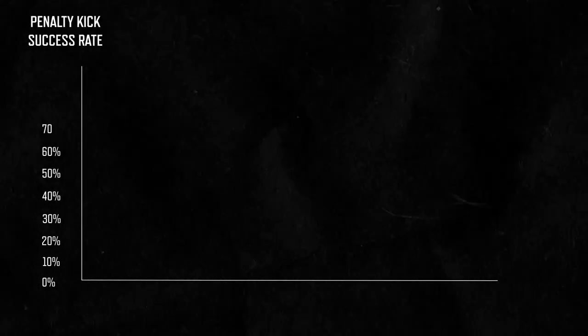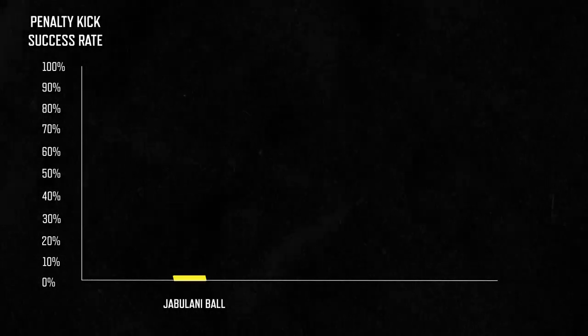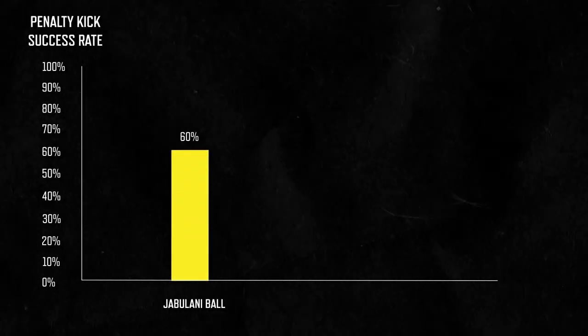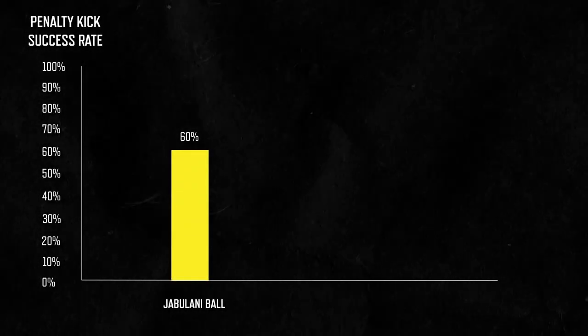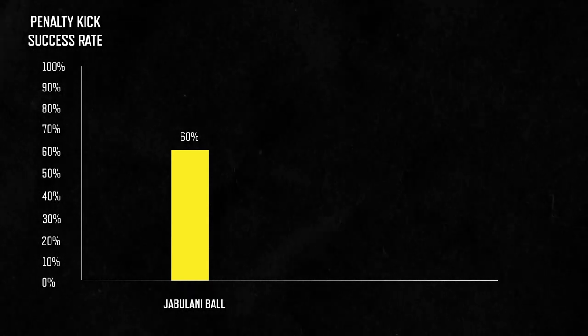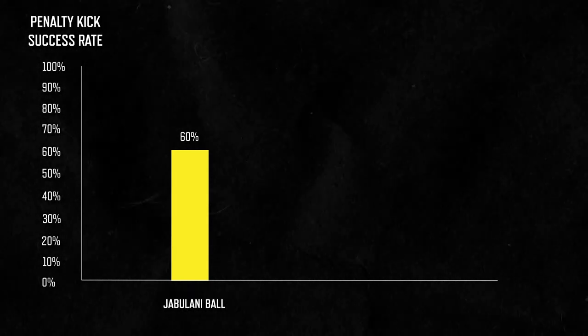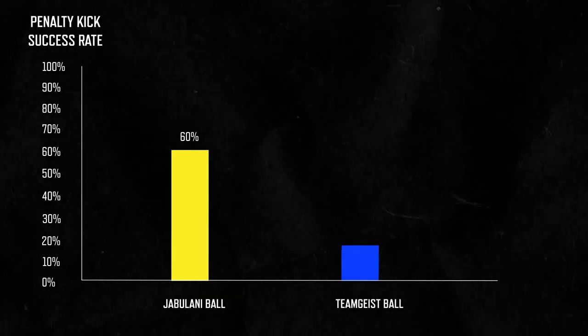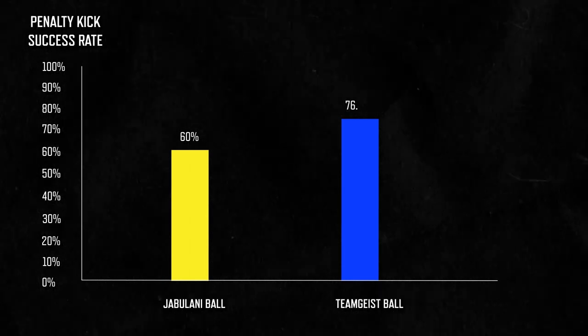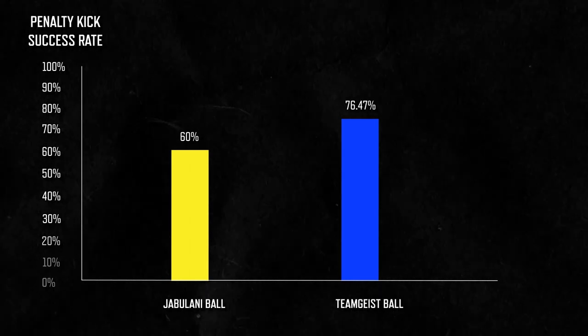The unusual aerodynamic movements of the Jabolani were likely a key factor in the 60% penalty kick success rate from players who kicked the ball. Comparatively, the Teamgeist ball from 2006 scored 76.47%.